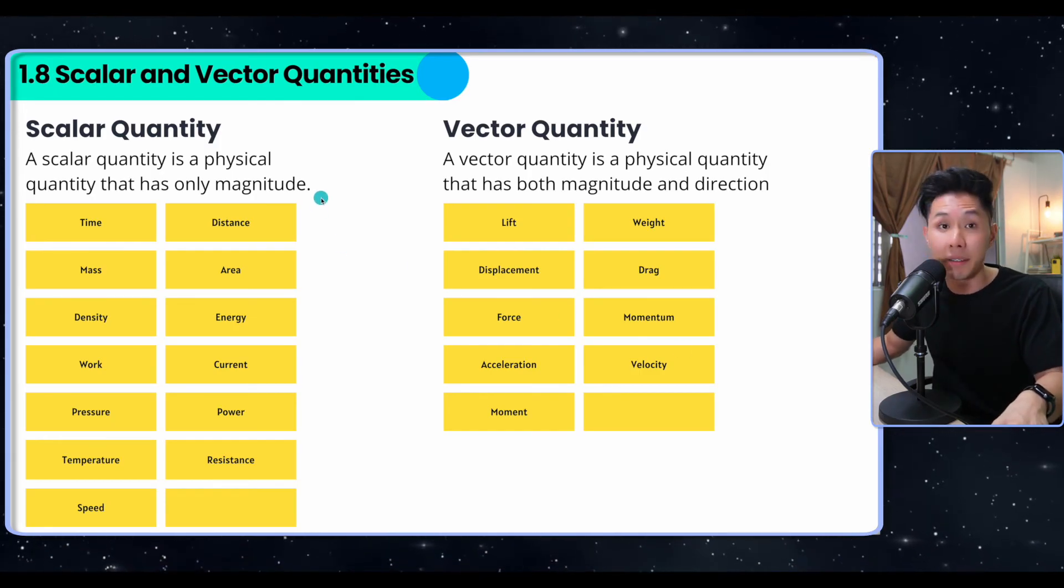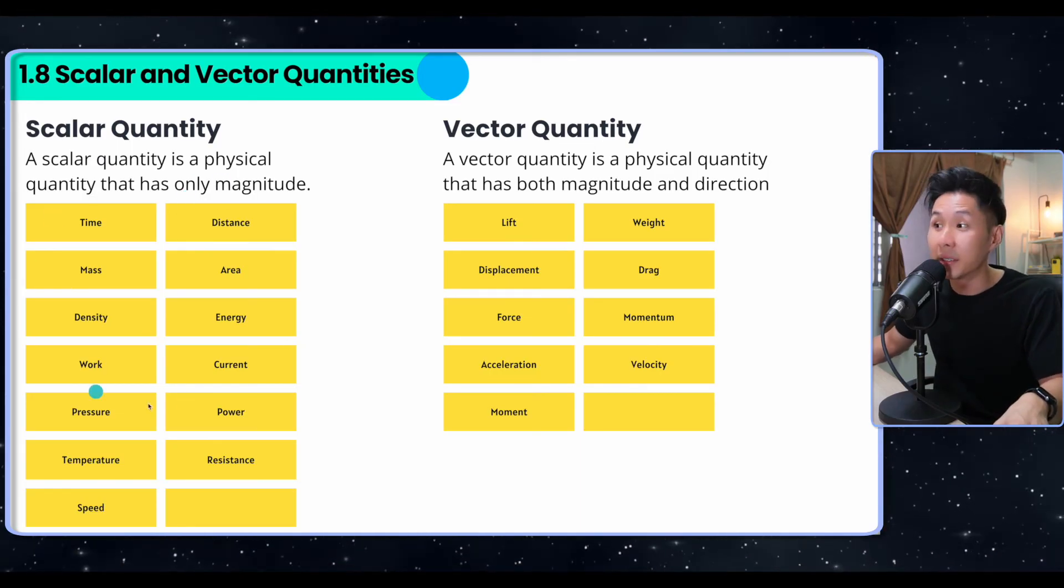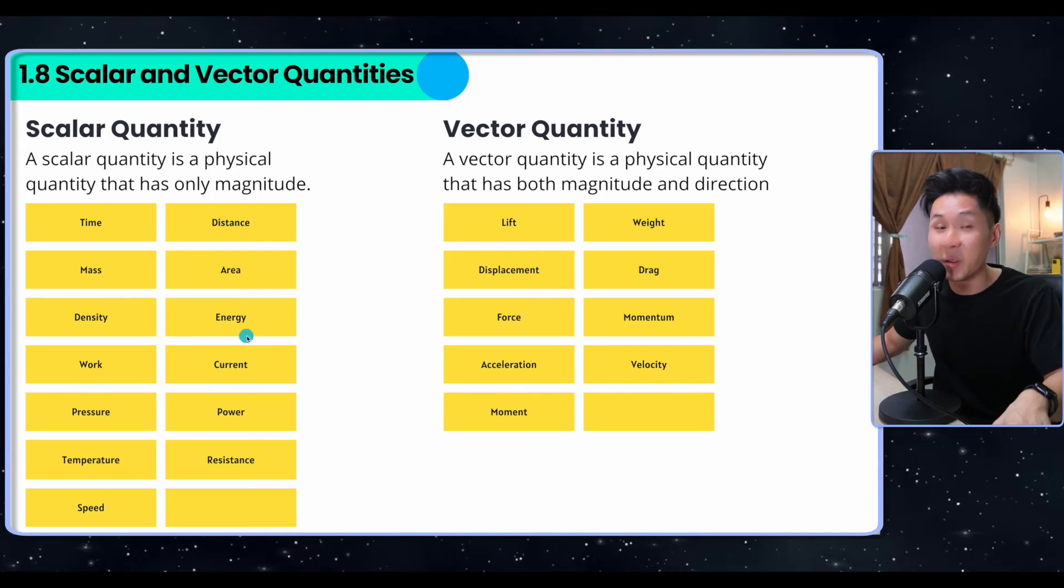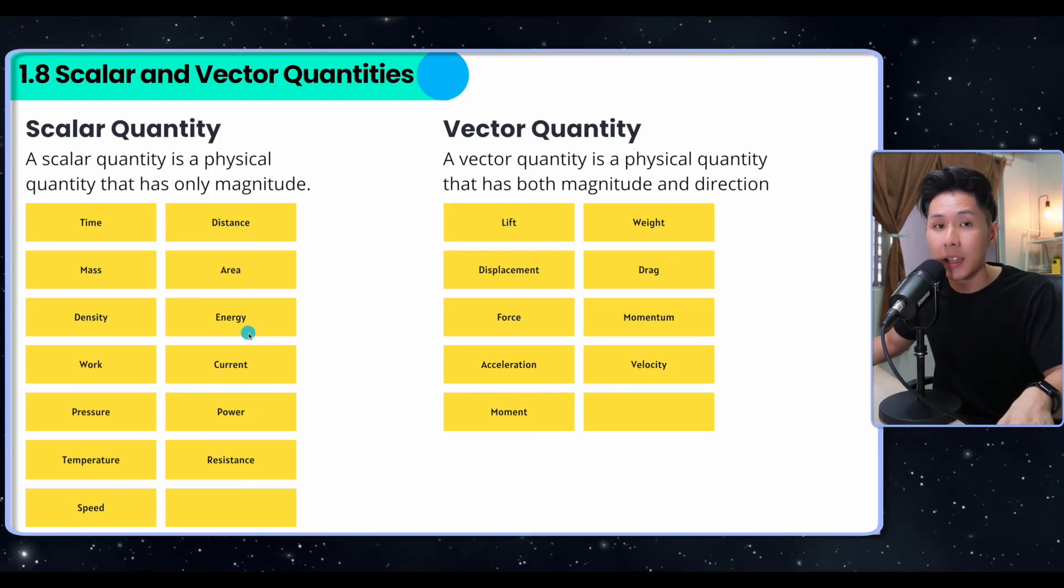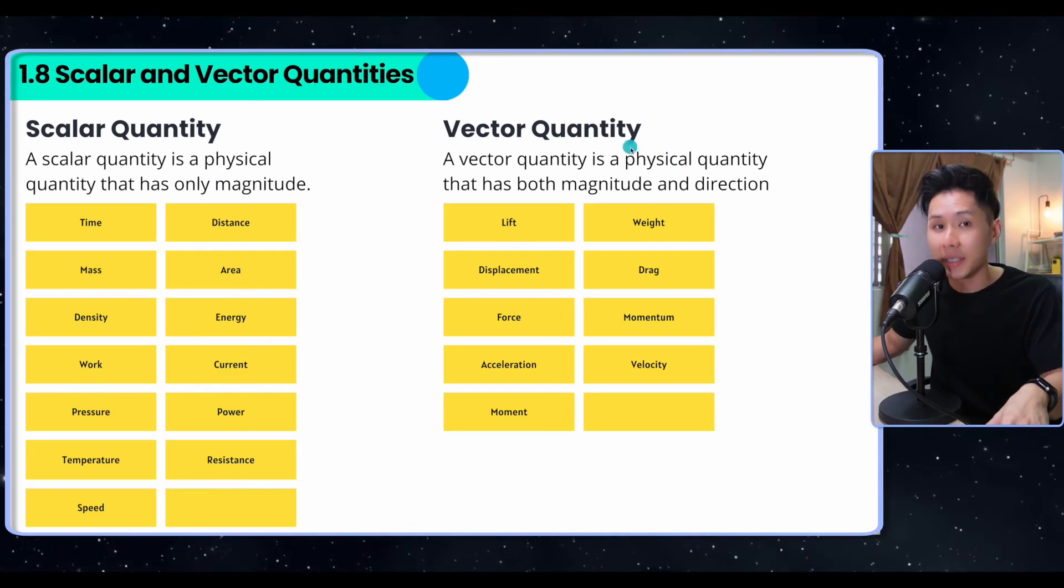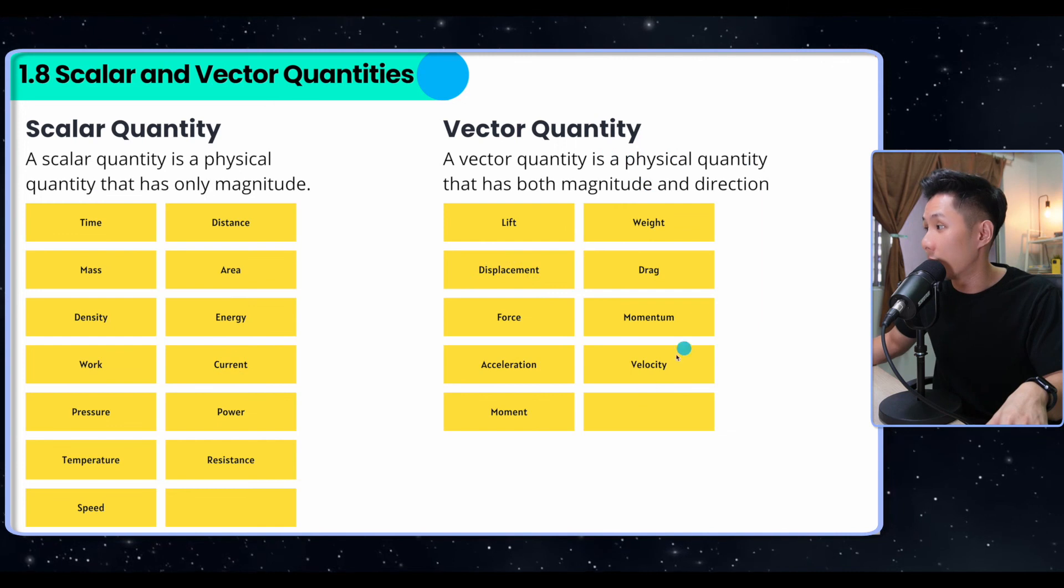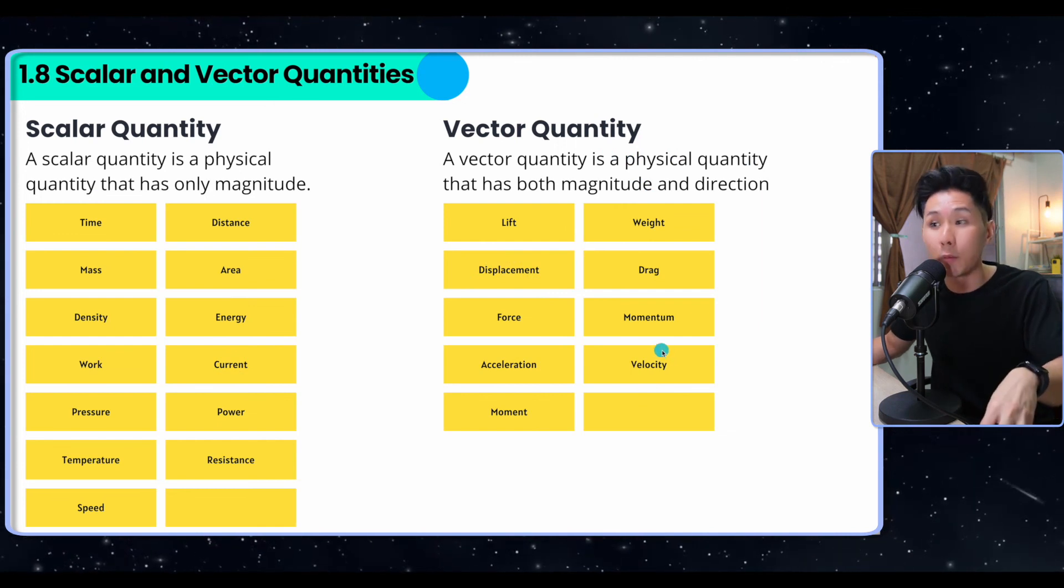The last sub-chapter of the day is scalar and vector quantities. Scalar quantity is a physical quantity that has only magnitude. These are all the quantities that you don't have to specify direction when you calculate them. Whereas vector quantity is quantity that has a direction, which is something that we have been learning today. Displacement, velocity - these are quantities that we need to state direction for.